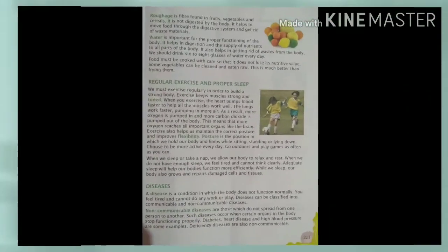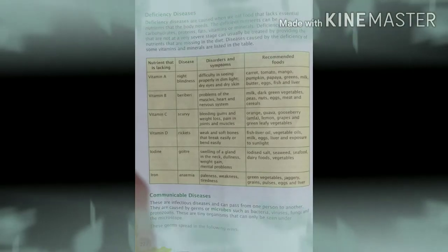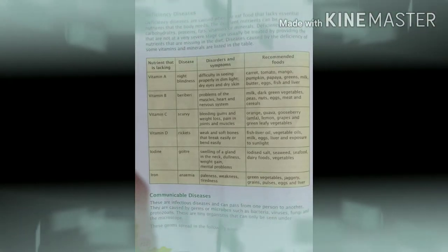Now we are going to discuss about four deficiency diseases. Deficiency diseases are caused when we eat food that lacks essential nutrients that the body needs. Deficient nutrients can be carbohydrates, proteins, fats, vitamins or minerals. Deficiency diseases that are not at a very severe stage can easily be treated by providing the nutrients that are missing in the diet. Deficiency diseases that are caused by the deficiency of some vitamins and minerals are listed in the table. You can see the table given below.